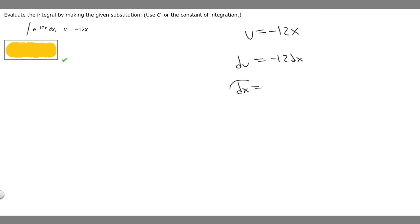And then what we want to do is solve for dx. So if we divide both sides by minus 12, dx is going to be equal to du divided by minus 12.